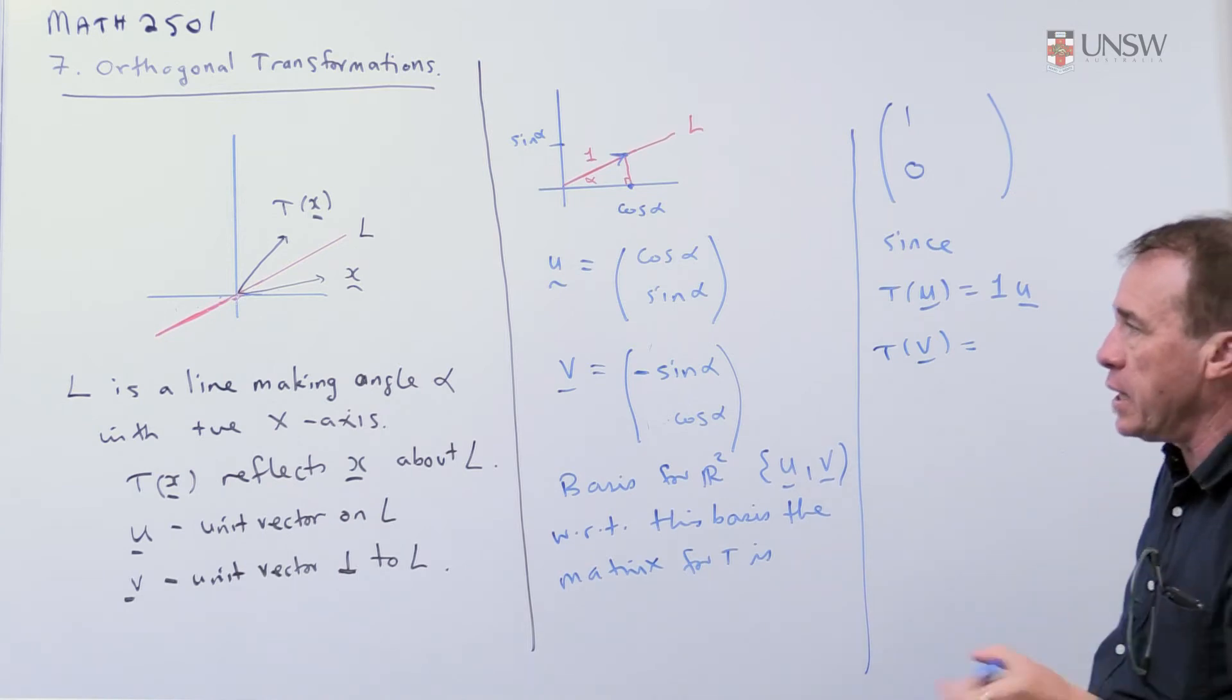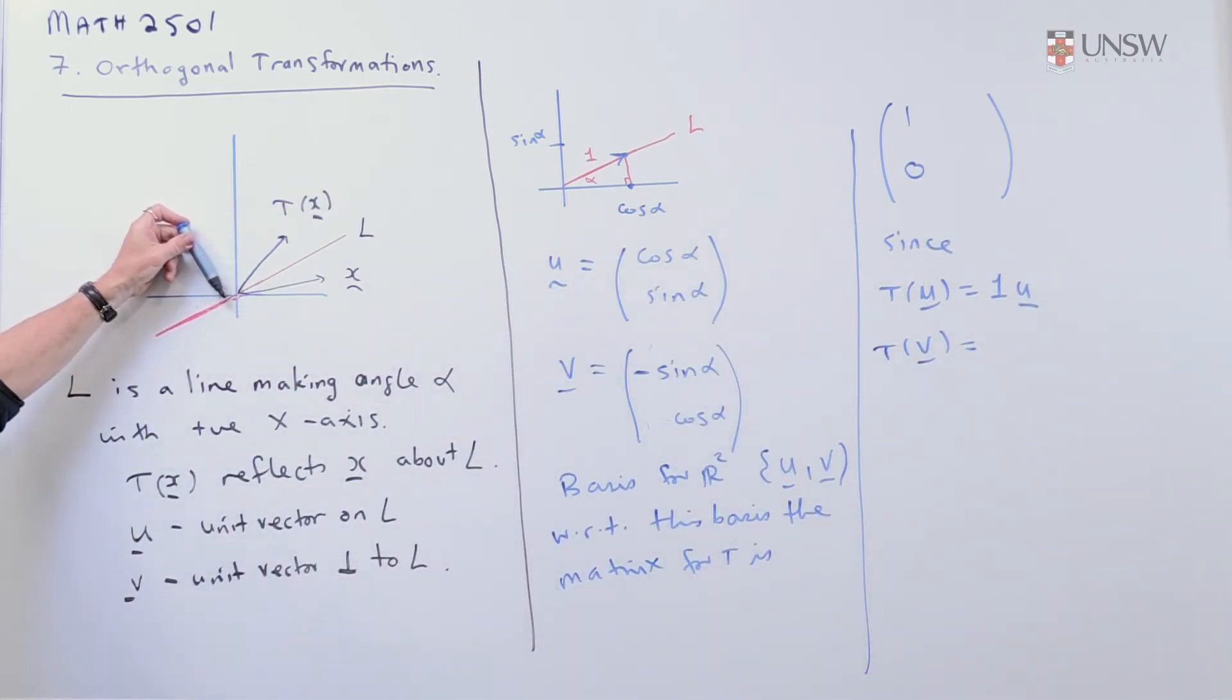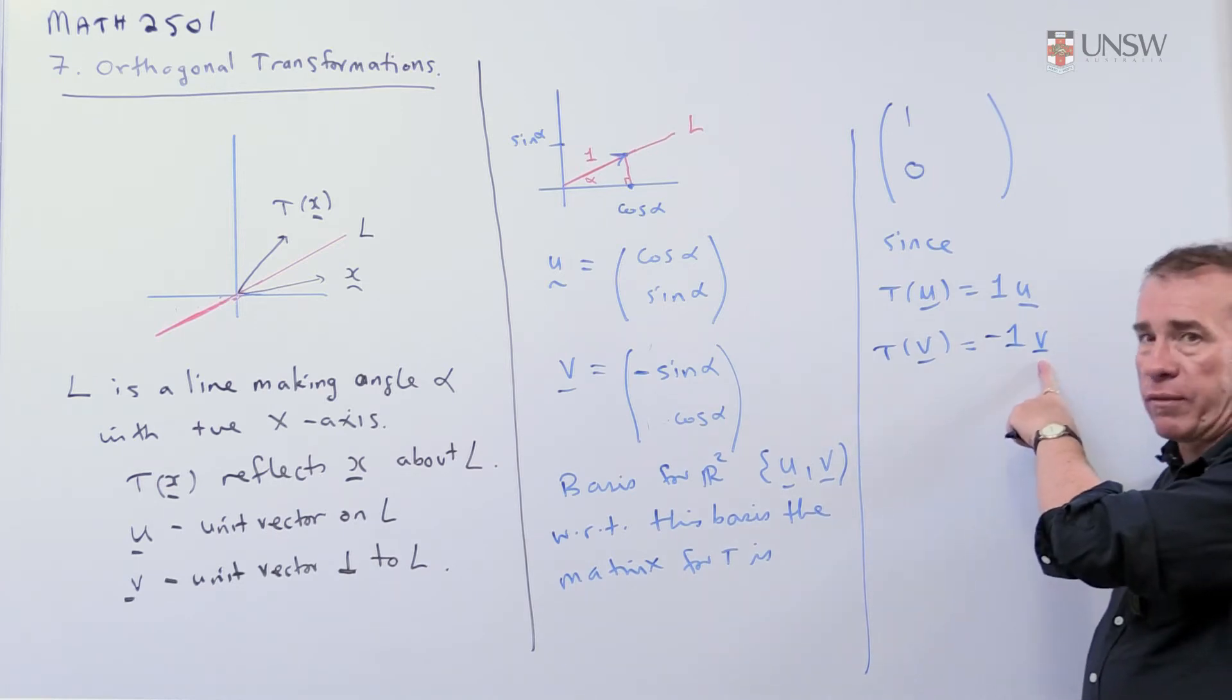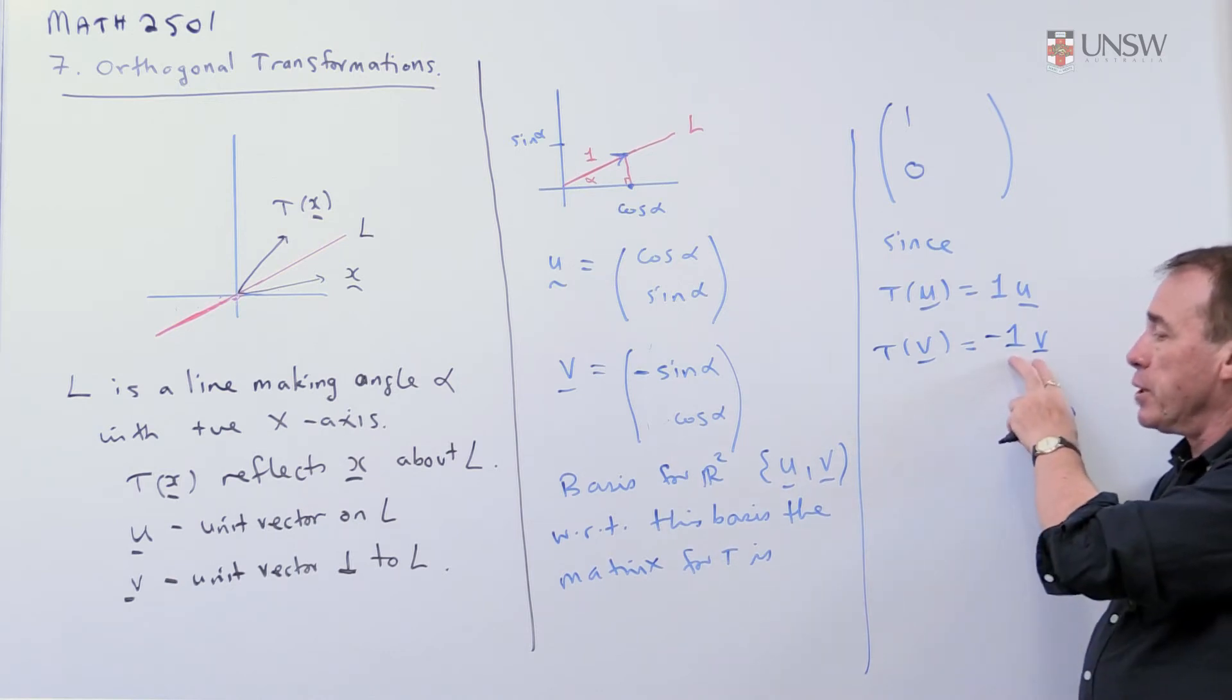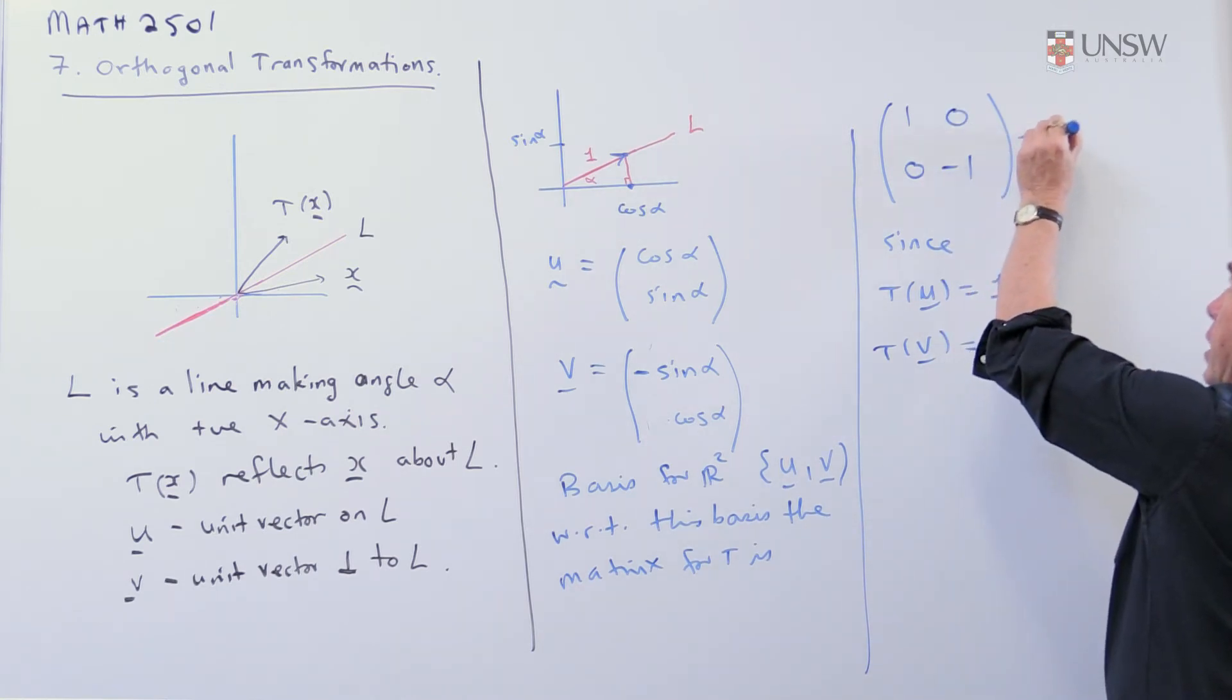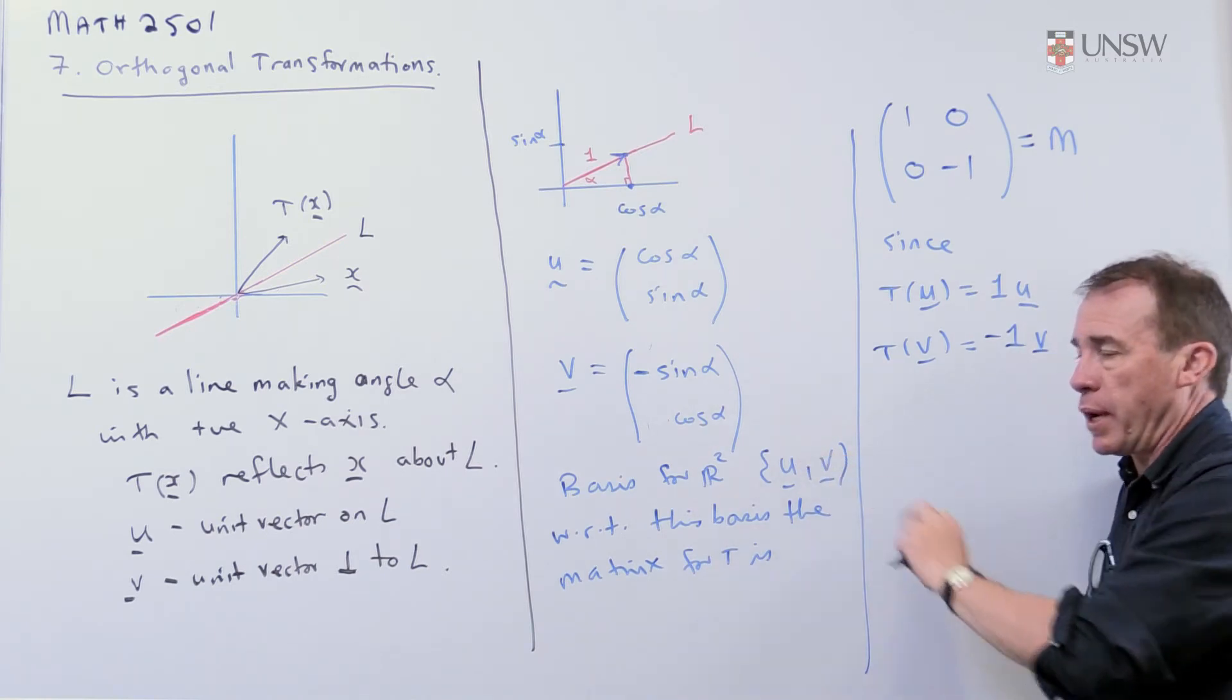And T of v, well, now think about what happens to v. v is a vector that's perpendicular to the line, and so when I reflect it about the line, I'm going to end up down here, and that will be minus v. So v is going to get mapped to minus 1 times v. And by the way, again, you should be thinking that means v is an eigenvector, and there's the eigenvalue. Now, I've got to build this one from this basis. So how do I do that? Well, I want none of those, and minus 1 of those. So there's the matrix. I'll give that a name and call that m. And there's a matrix representation with respect to this basis.